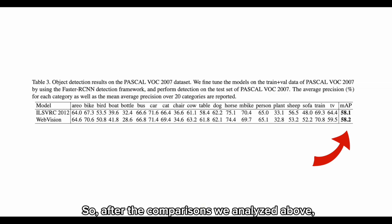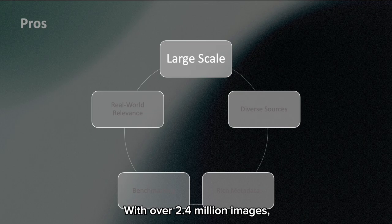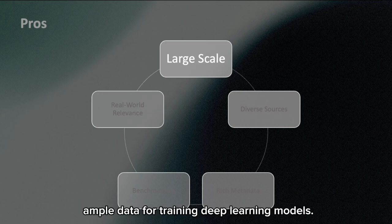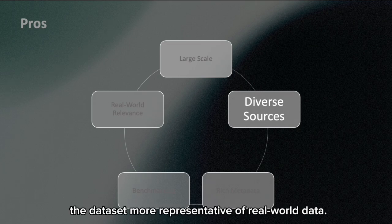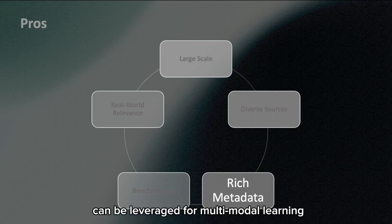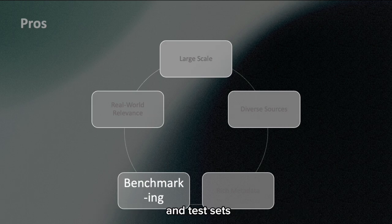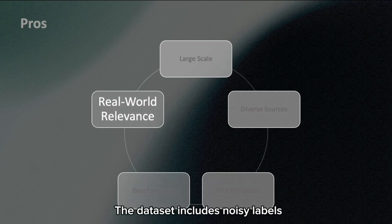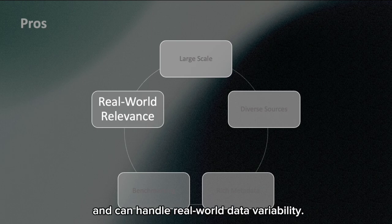After the comparisons analyzed above, we can summarize the advantages of WebVision. First, large scale: with over 2.4 million images, WebVision provides ample data for training deep learning models. Second, diverse sources: images from Google Image Search and Flickr offer varied contexts, making the dataset more representative of real-world data. Third, rich metadata: the accompanying metadata, including titles, descriptions, and tags, can be leveraged for multimodal learning and improving model accuracy. Fourth, benchmarking: the inclusion of human-annotated validation and test sets allows for reliable evaluation of model performance. Fifth, real-world relevance: the dataset includes noisy labels typical of web-sourced data, helping develop models that are robust to label noise and can handle real-world data variability.